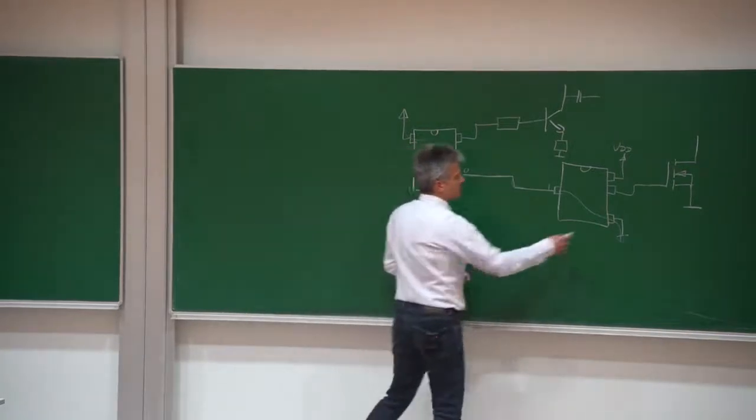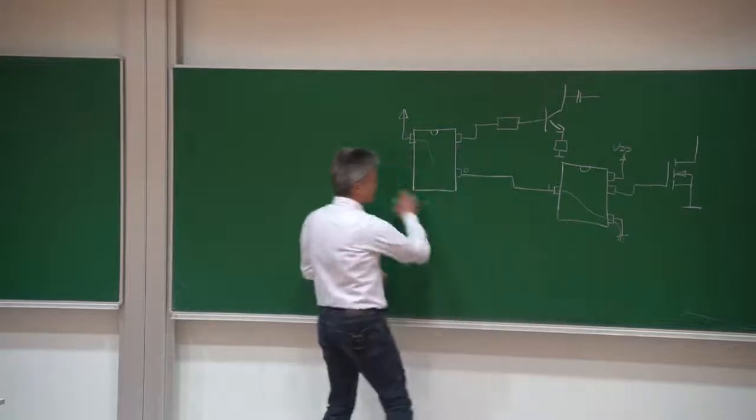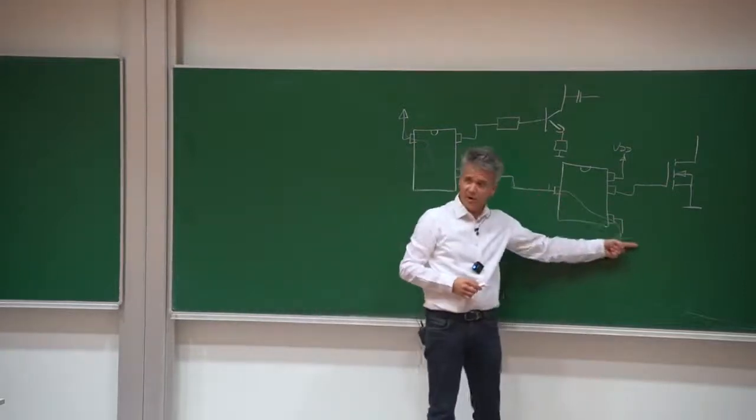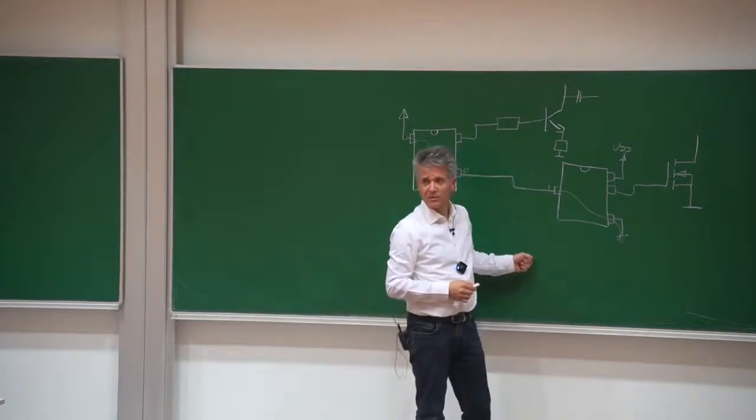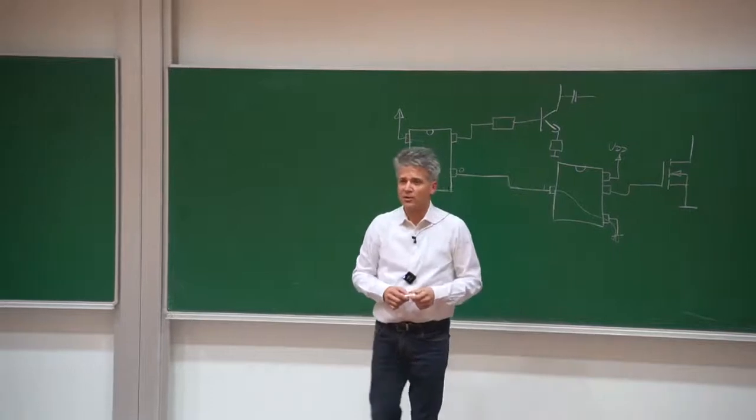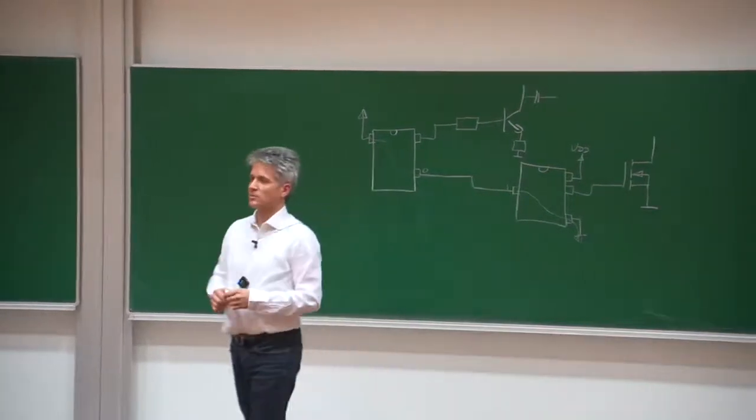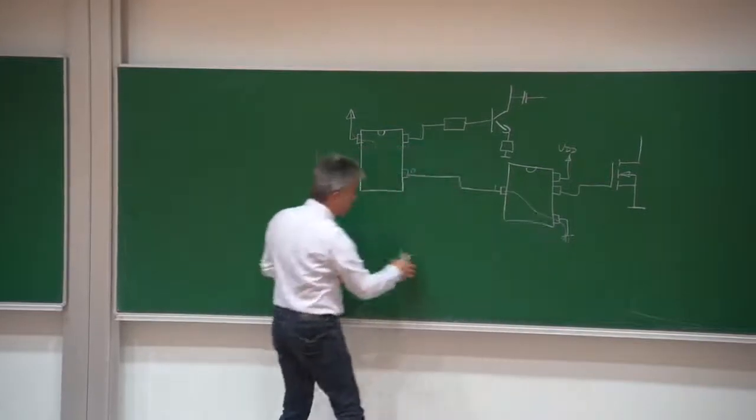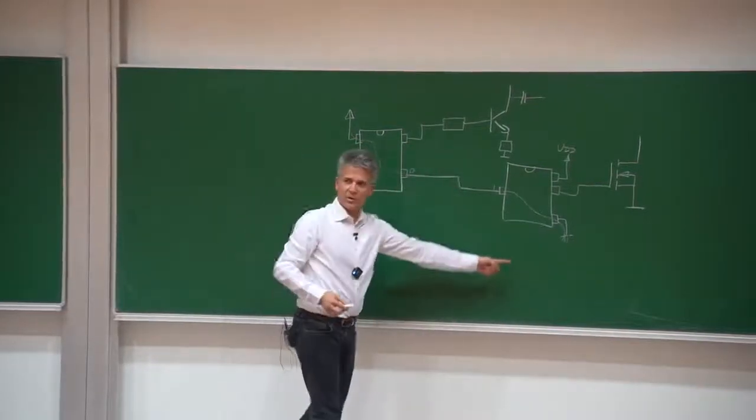Because as I said every current that flows here has to come back and it's not always the case that the current goes back by ground. Especially high frequency currents, they go back by the path of the least impedance.